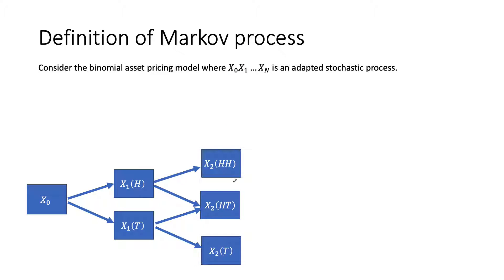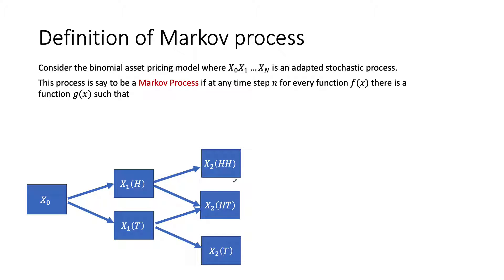We say that this adaptive stochastic process is a Markov process if at any time step n, for every function f that I can think of, there is another function g such that this relationship holds. To understand this, we can think about it this way.